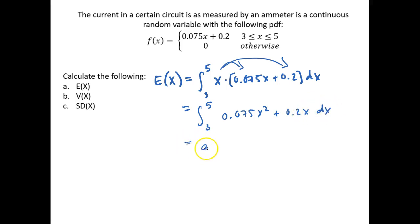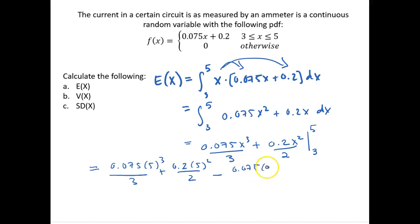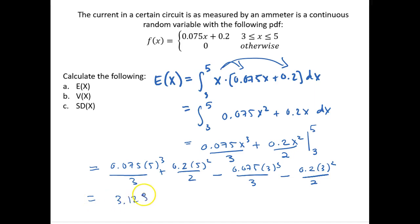Integrating, we get 0.075x cubed over 3 plus 0.2x squared over 2, evaluated from 3 to 5. Plugging in 5 and then 3, these expressions equal 3.125 plus 2.5 minus 0.5 minus 0.675 minus 0.9 respectively.